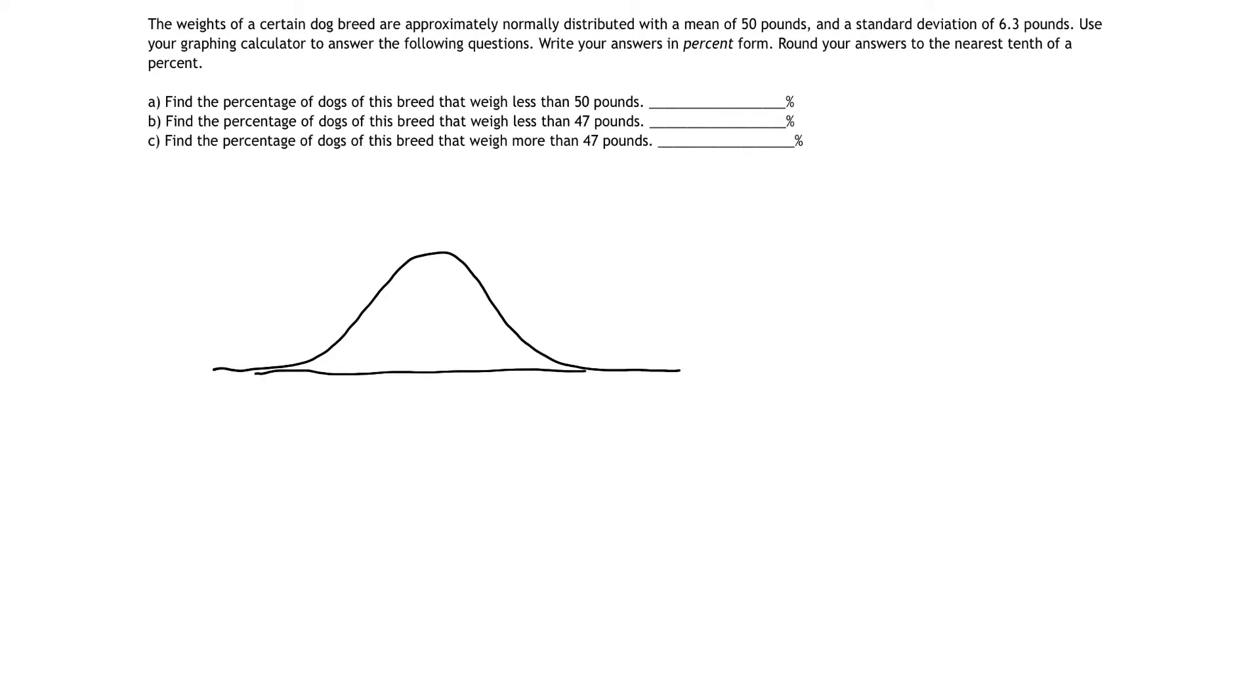And in that standard normal curve, I have a mean of 50 pounds. So I'm going to draw 50 pounds right there as my mean. And since my standard deviation is 6.3, that tells me if I go one standard deviation to the right, I have 56.3 pounds at that marker. And one standard deviation to the left would be 50 minus 6.3 or 43.7 pounds here on the left.